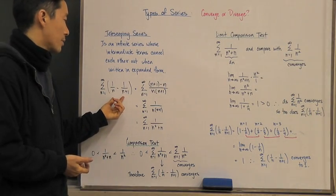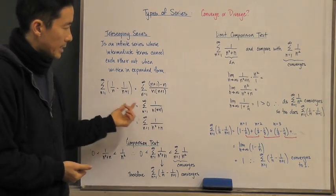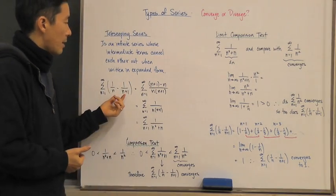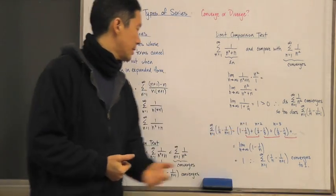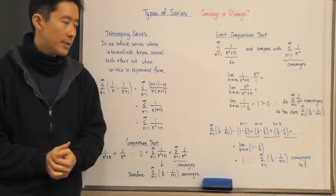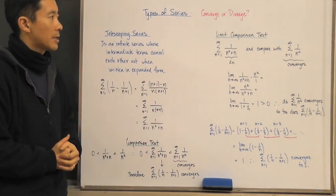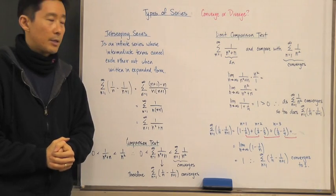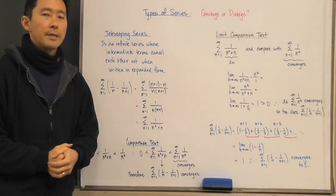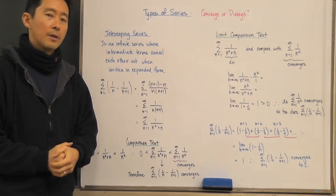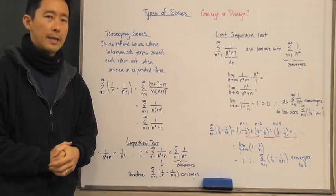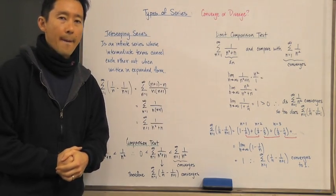It's important to recognize that when we expand a series, we may be able to identify it as a telescoping series. And even if we don't recognize it as telescoping, we can still use other methods to determine whether the infinite series converges or diverges. We'll take a look at a couple of other types of infinite series later.